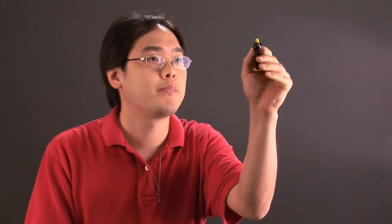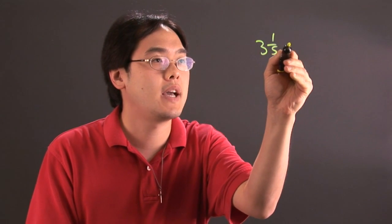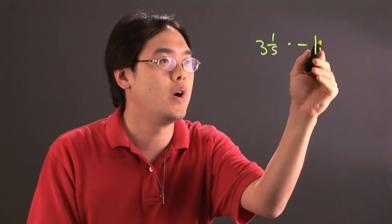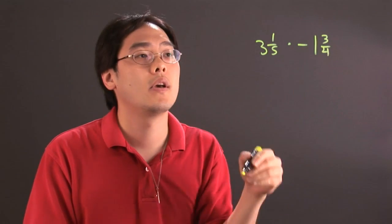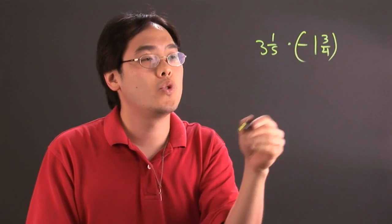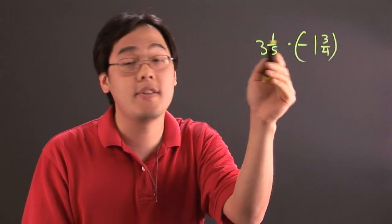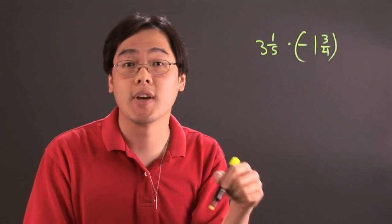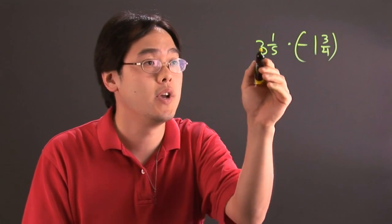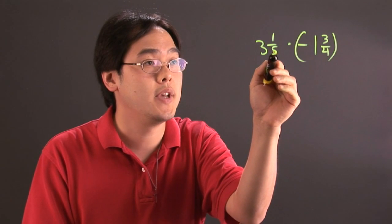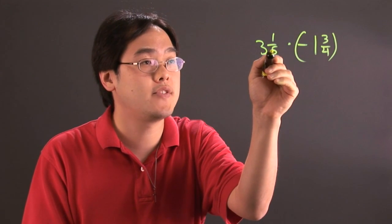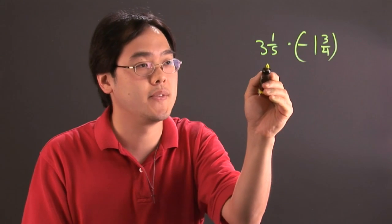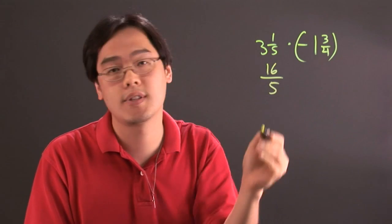For example, if you have 3 1/5 times negative 1 and 3/4, what you've got to think about is, every time you have a mixed number, positive or negative, you've got to convert it to an improper fraction. For this one, 5 times 3 is 15, add the 1, it's going to give you 16, so 16/5.